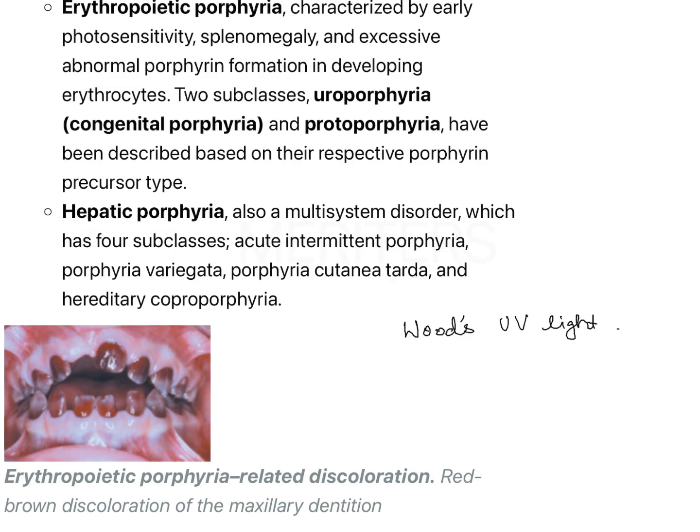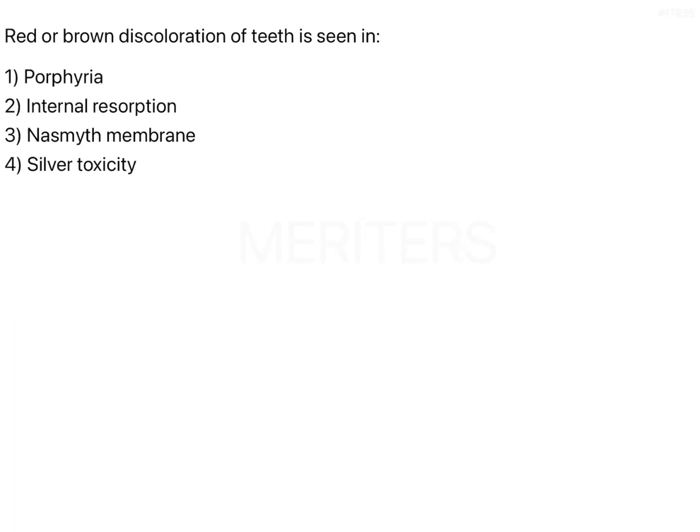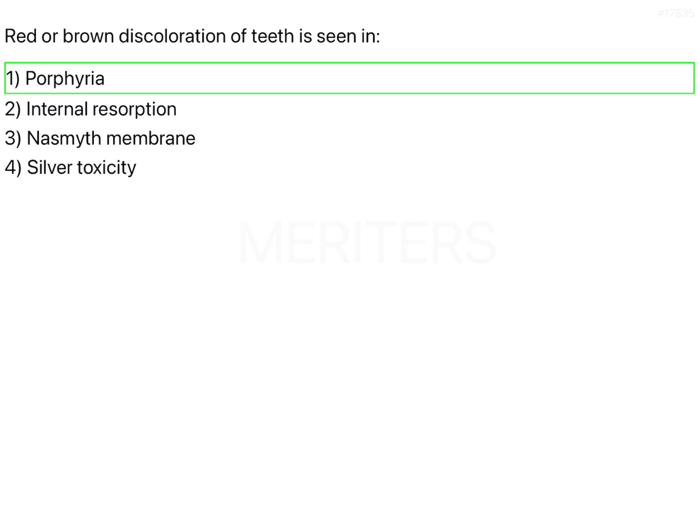This is important from a staining point of view, clinical perspective, image-based questions, and because it is an autosomal recessive disorder of porphyrin metabolism. So the correct answer is option one — porphyria.